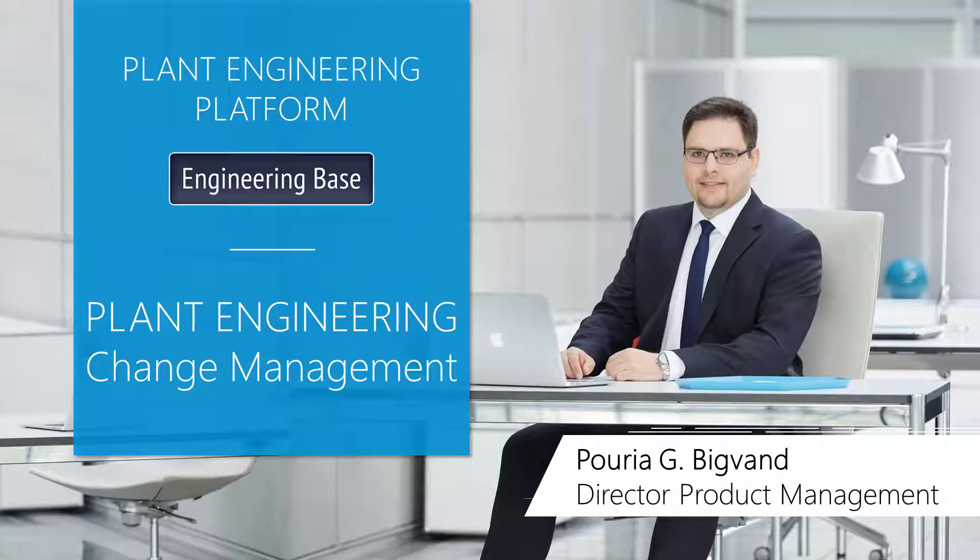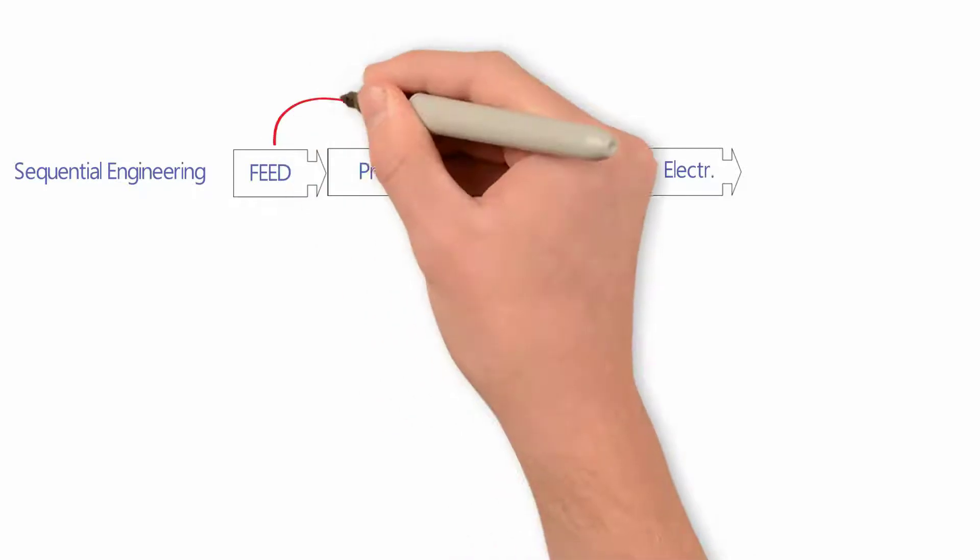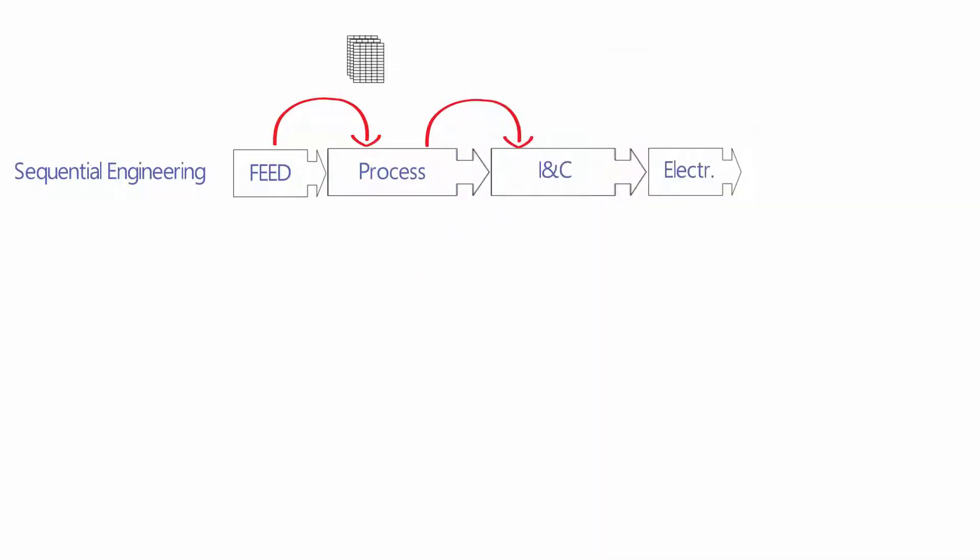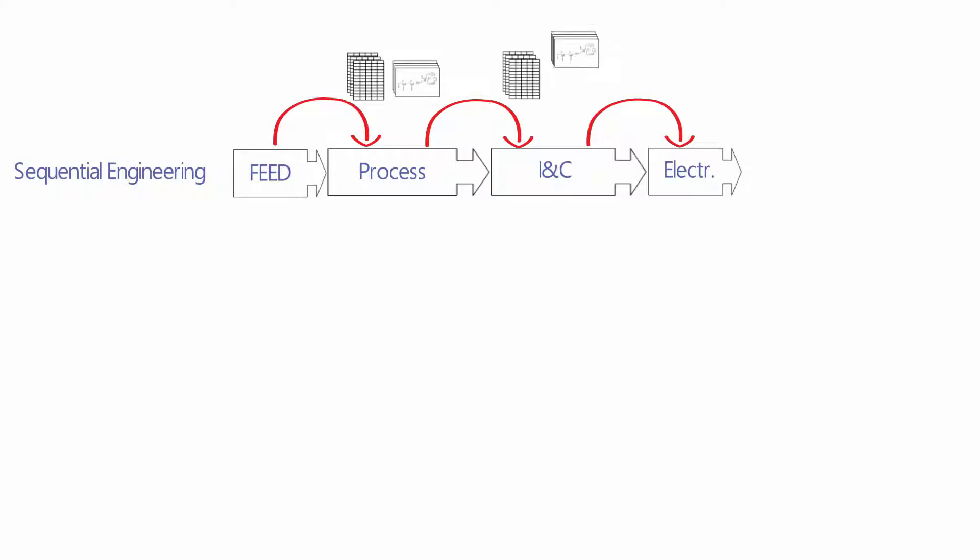Plant engineering engineering base change management. Sequential engineering is a conventional method of plant engineering. Here each discipline starts to work based on deliverables of previous disciplines. If there is a change in one discipline, this change and chain of consequence changes will be marked in the next release of related documents and sent from one discipline to the other. Tracking of changes is limited to identifying what has changed from the last revision of received documents.